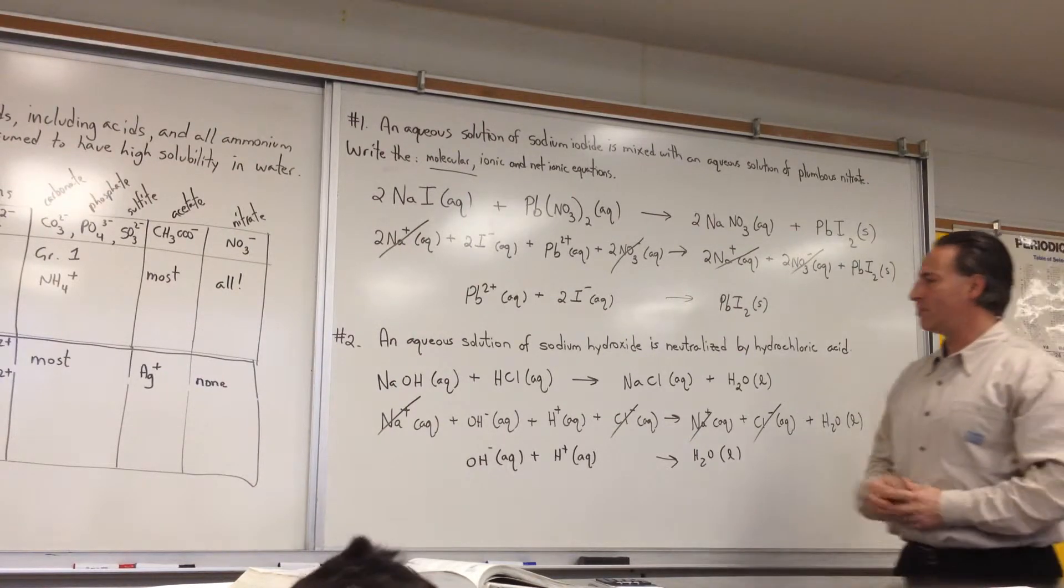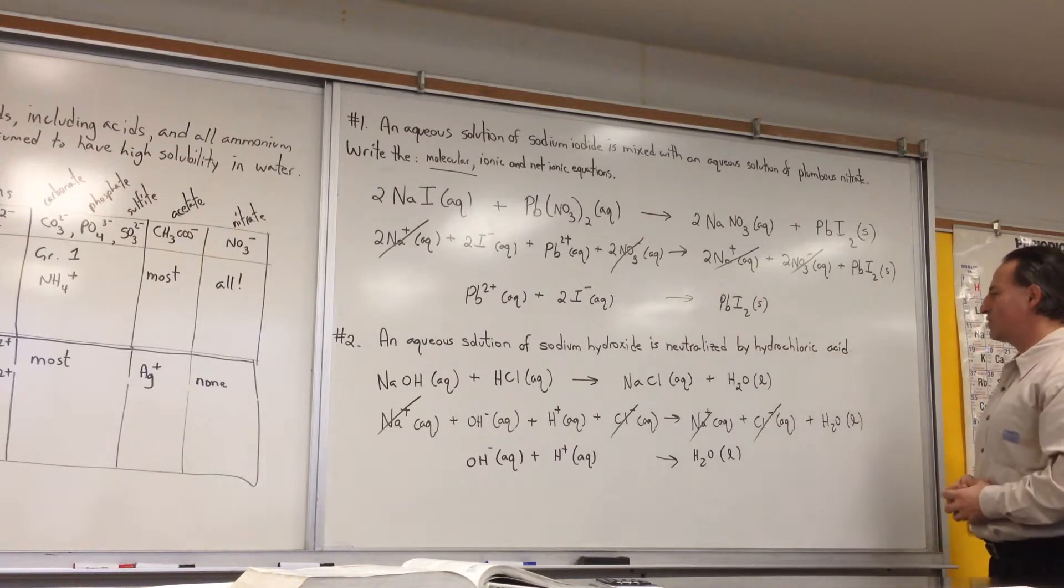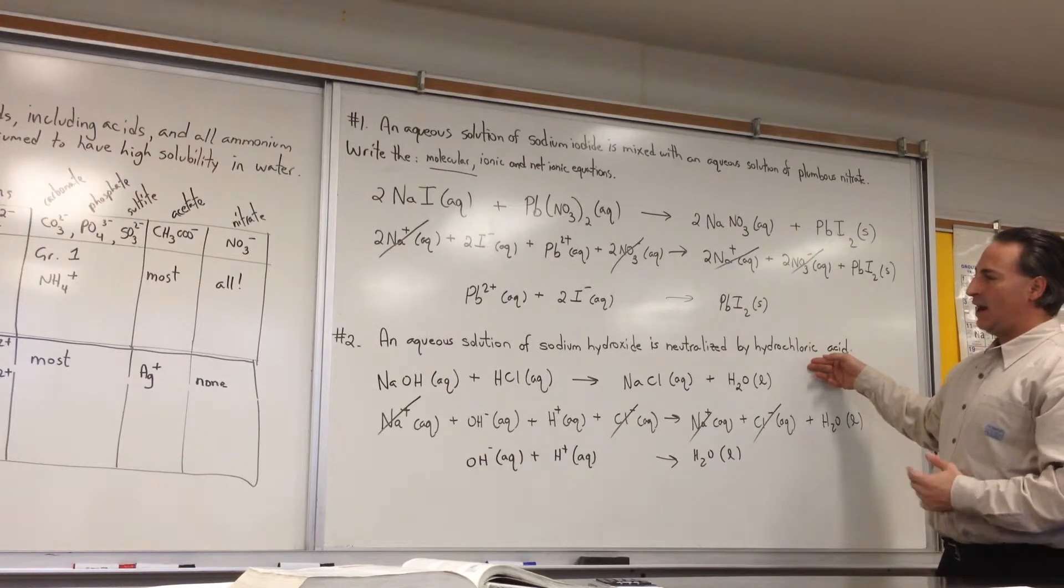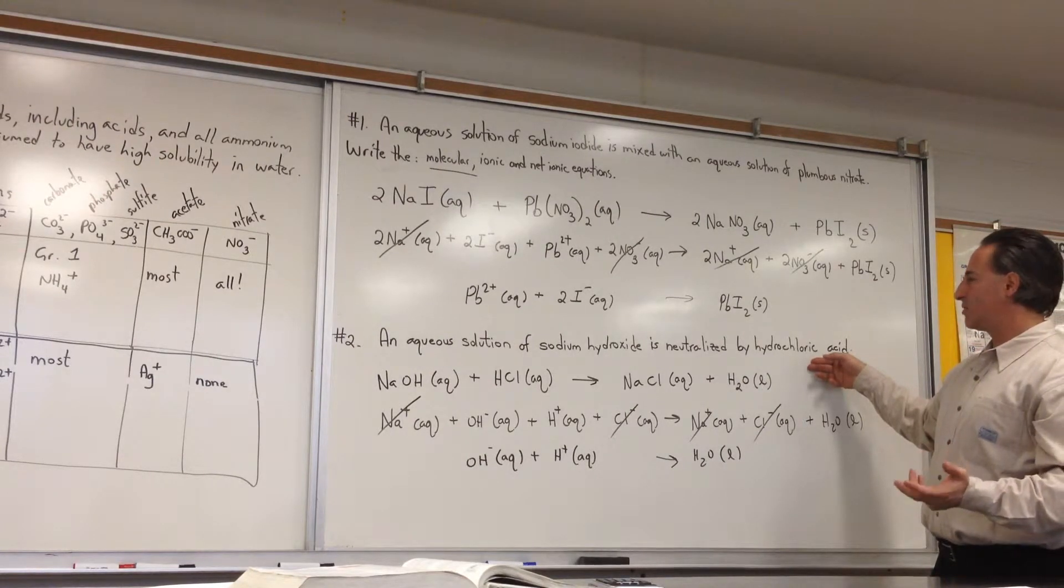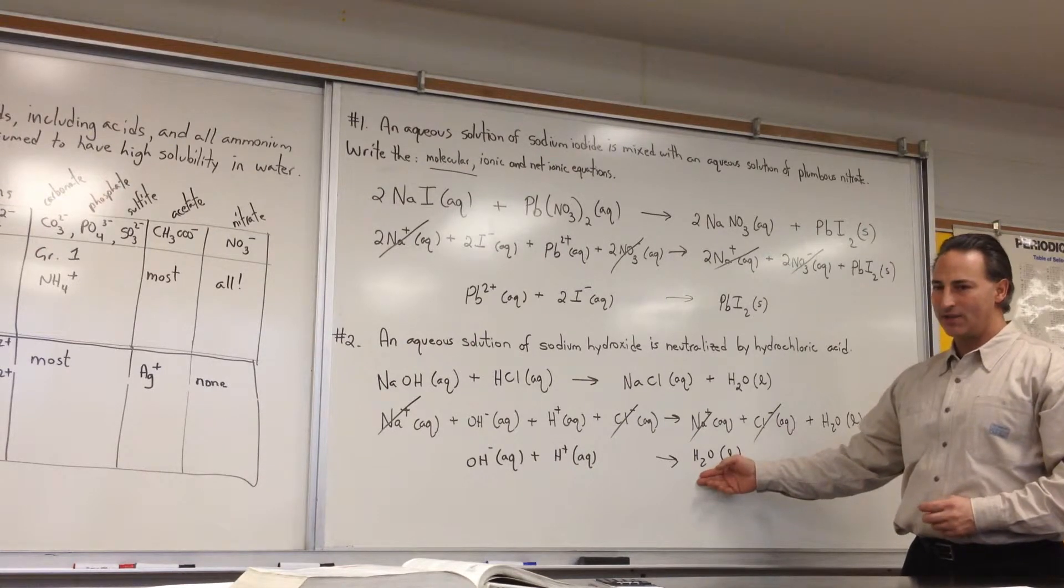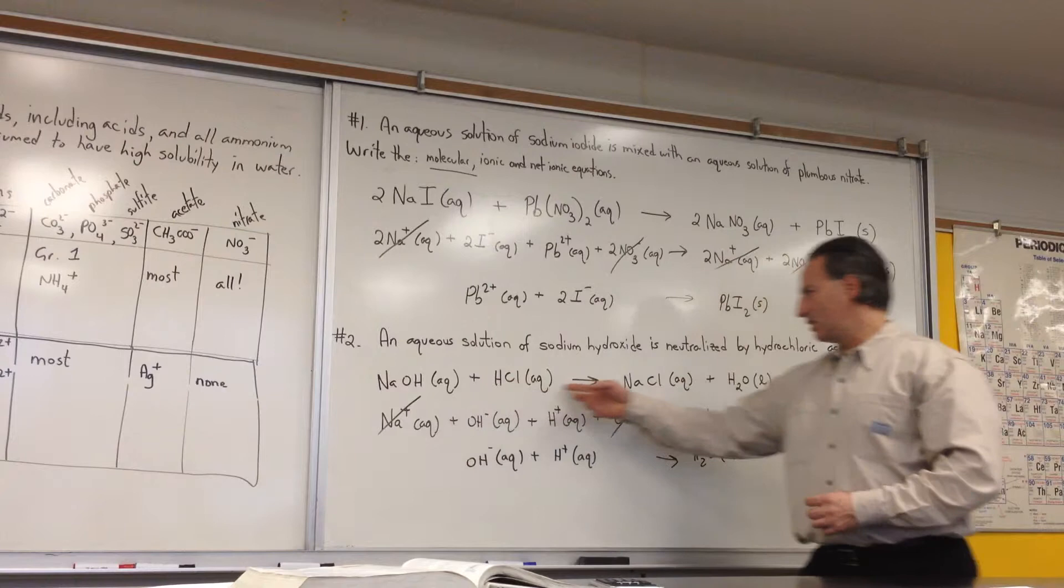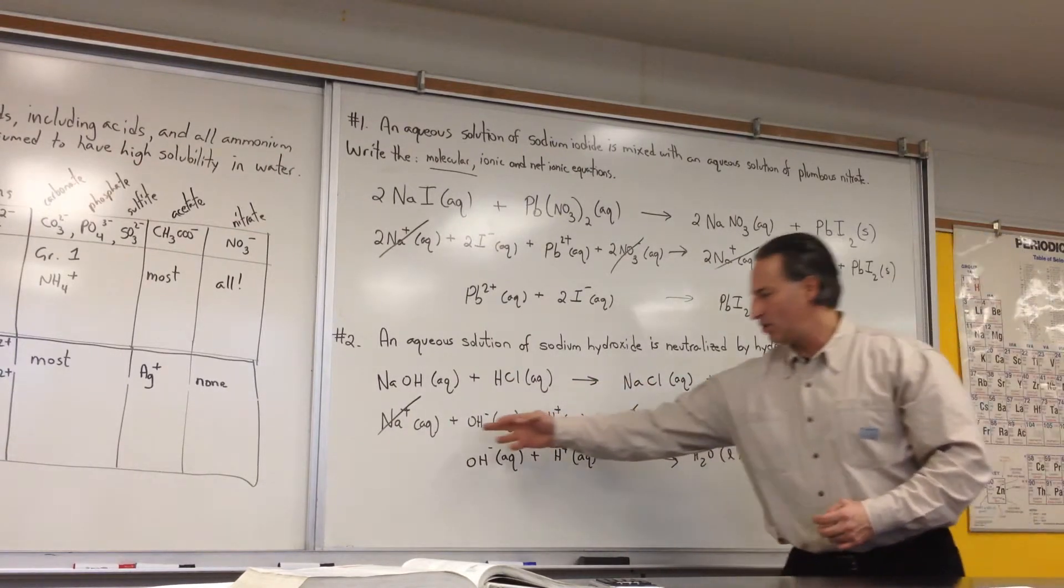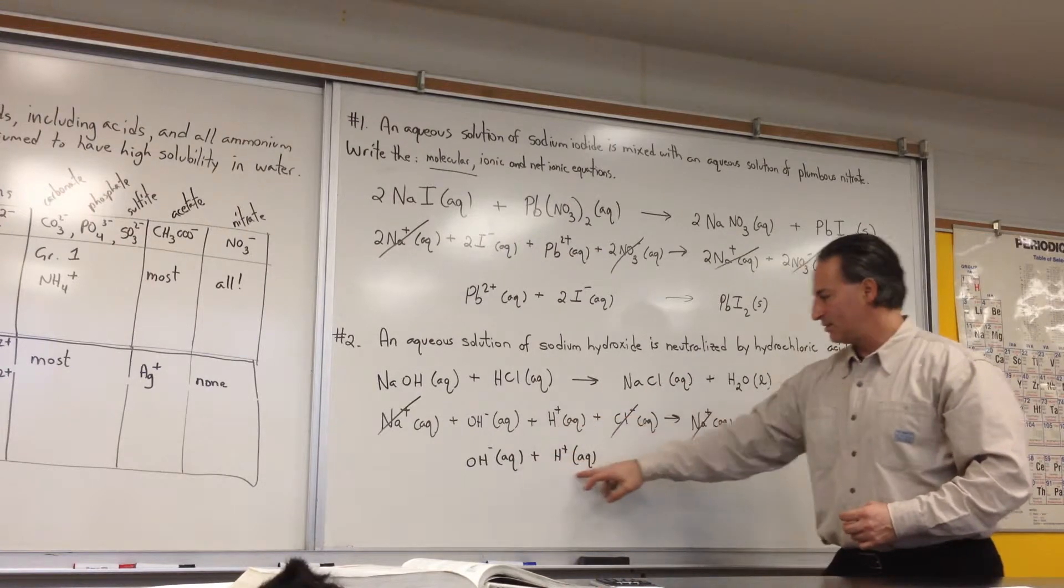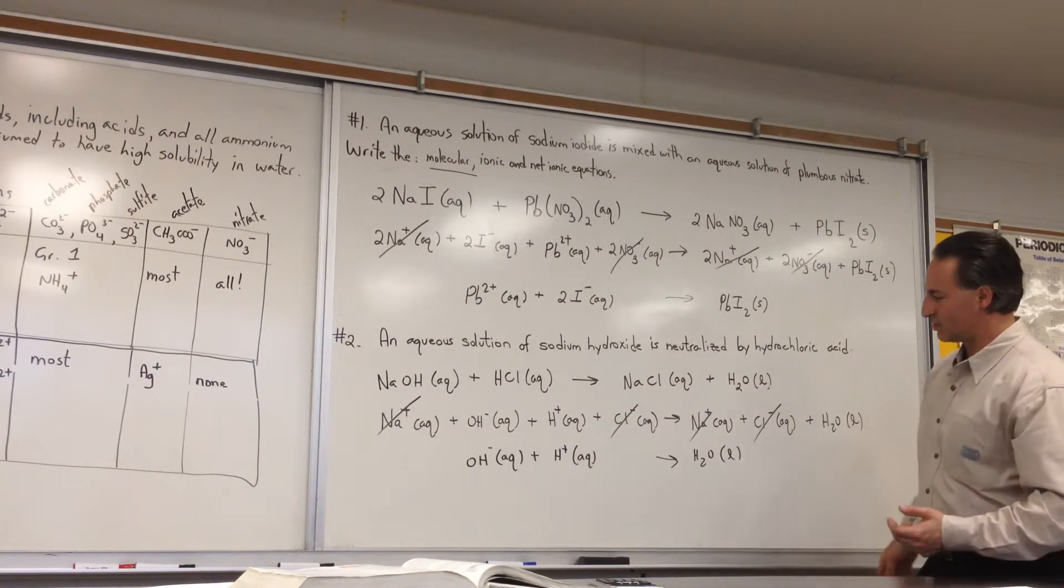In the second example, we have an aqueous solution of sodium hydroxide is neutralized by hydrochloric acid. This is a reaction between a strong base and a strong acid. Whenever you have a strong base reacting to a strong acid, you always get water being formed as your net ionic equation. So here I've shown the molecular equation. Here I've shown all the things dissociated. And then I cross off all these spectator ions to show you the actual reaction that's happening between a strong acid and a strong base.